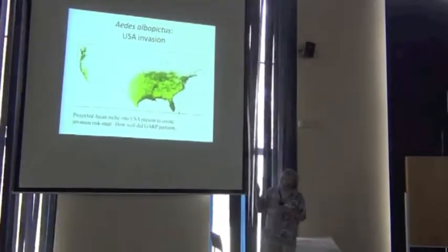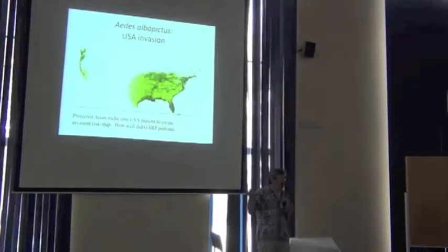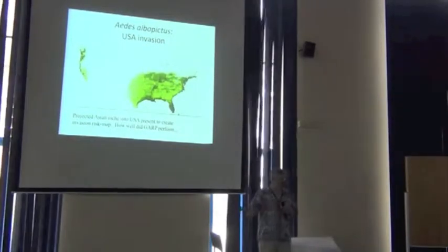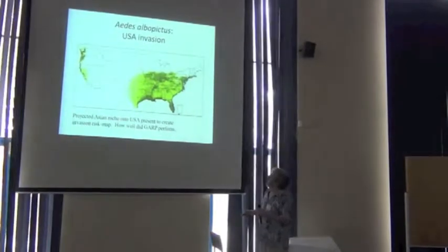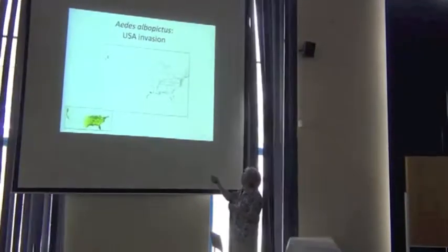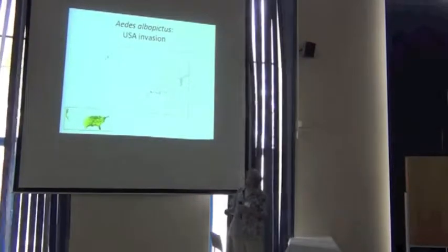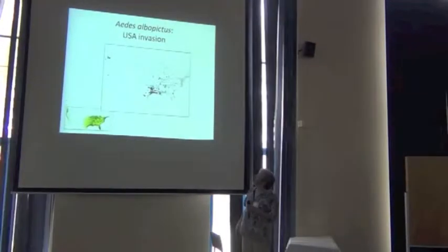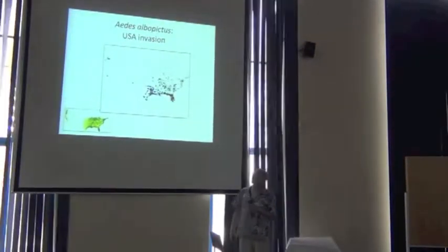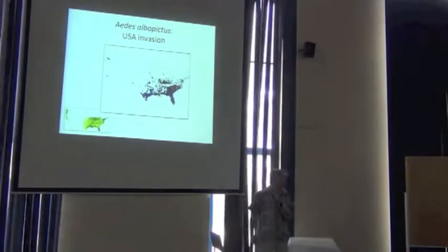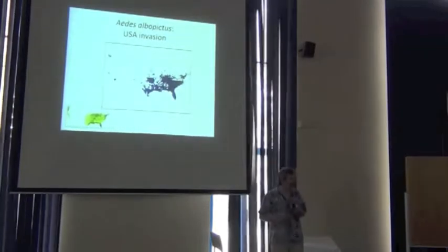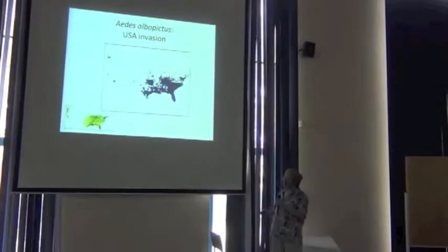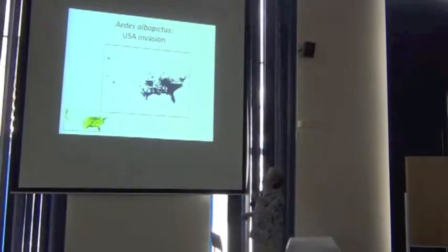Now, 1988, Aedes albopictus arrives in North America. It jumped over the ocean with a little bit of help from humans. And it arrives in Houston, Texas, and then starts to invade. And so you can see the red counties are new county records through time. And that goes up to about 2003, which is when this graphic was produced.